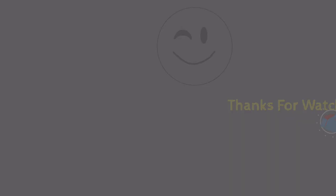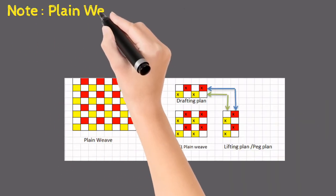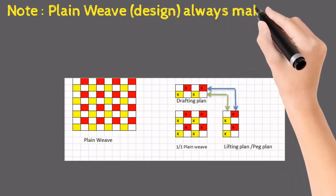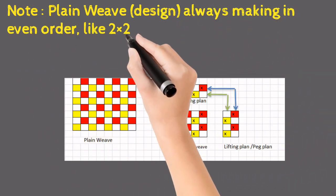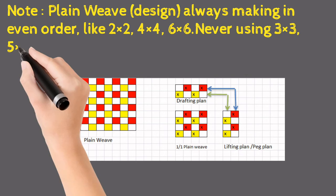Plain weave designs are always made in even order, like two, two, four, four, never using three, three, five, five in plain order.